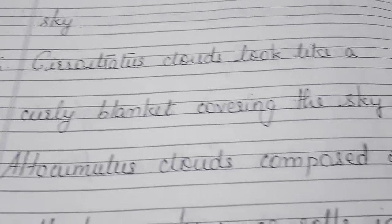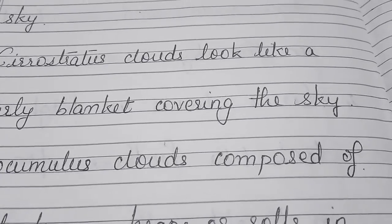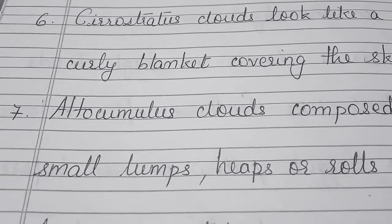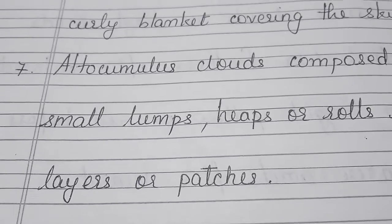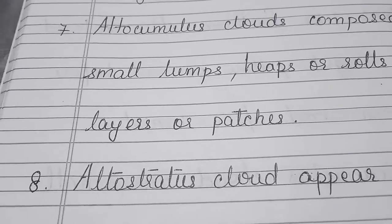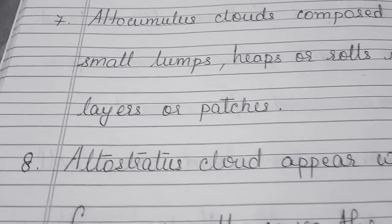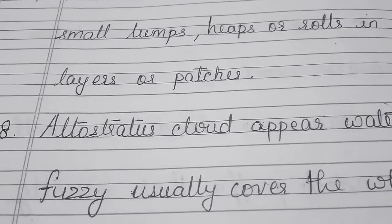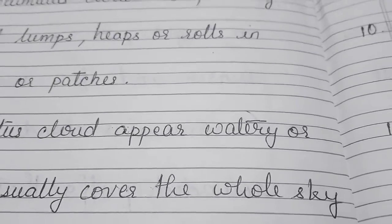Altocumulus clouds are composed of small lumps, heaps, or rolls in layers or patches. Altostratus clouds appear watery or fuzzy, usually covering the whole sky, and indicate a change in weather.